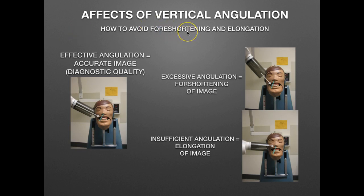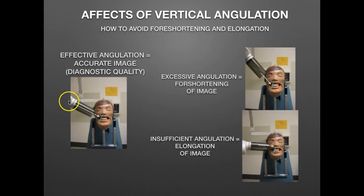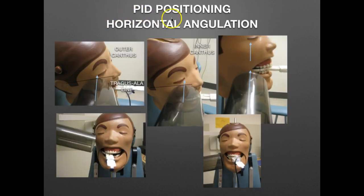To avoid errors of foreshortening and elongation, proper angulation is essential. If we have excessive vertical angulation to the image receptor and tooth, the image will be foreshortened — a short, squatty tooth that doesn't represent the true length. If you have insufficient angulation, the image will show a very long, stretched-out tooth, likely with no visible apex.